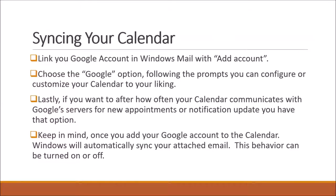In Windows, you just go in and add your Google account, choose the Google option, follow the prompts, and it will customize your account to your liking. You can also set how often your calendar communicates with the servers for new appointments. Keep in mind that once you add your Google account to the calendar, Windows will automatically sync your attached mail as well — but that can be turned off. Just be aware that if you suddenly start getting duplications of your mail, it's because it's also bringing in your Gmail.